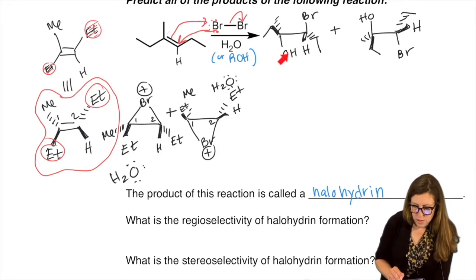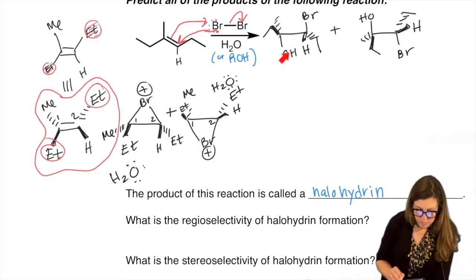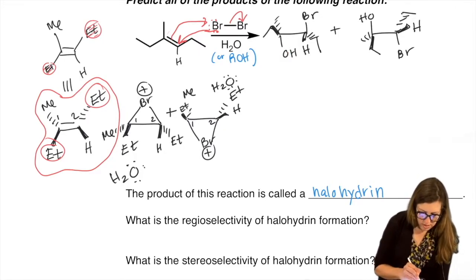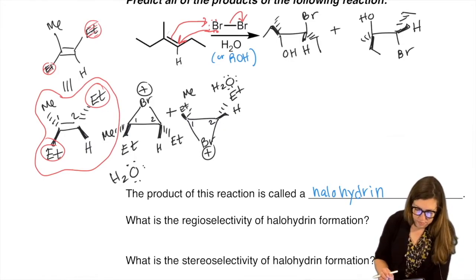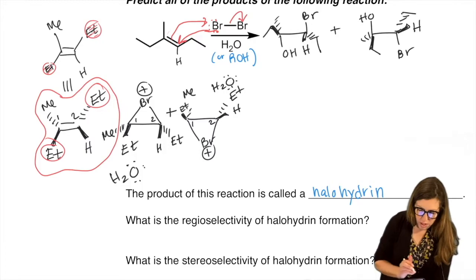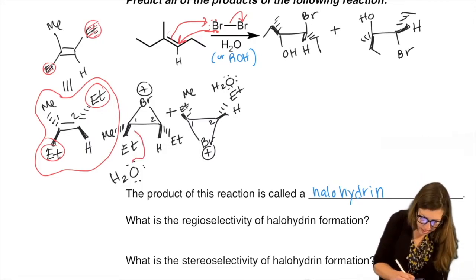The nucleophile here is going to attack the more substituted carbon. That should bother you a little bit because the arrow we're about to draw is supposed to represent an SN2-like backside attack, right? So who's the most substituted carbon? Carbon one, right? Backside attack to open. Carbon one, backside attack to open.